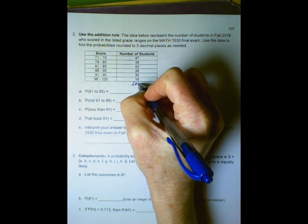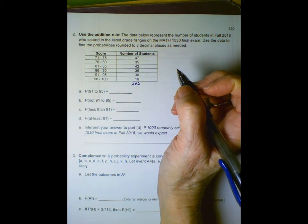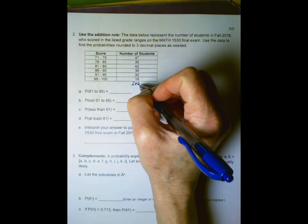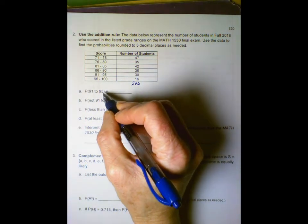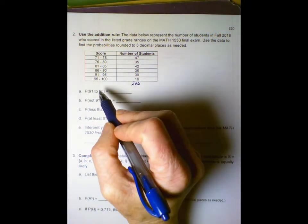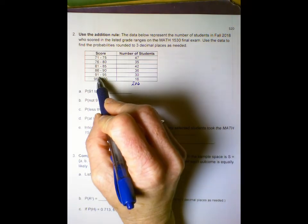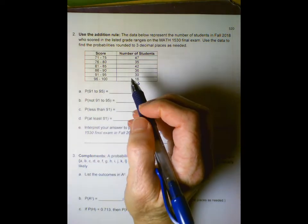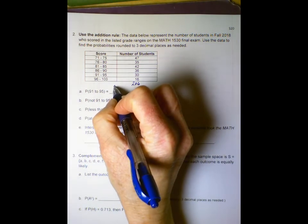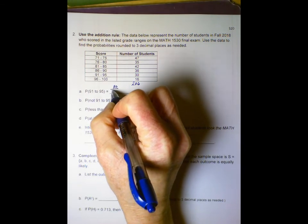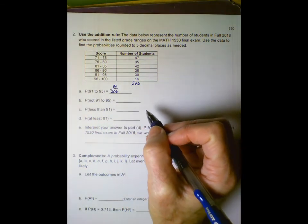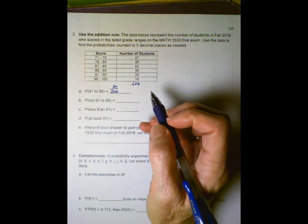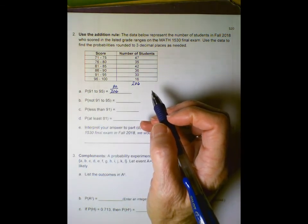Relative to 206 students, how many earned a score between 91 and 95? We can see that was 30. So 30 students out of 206 scored between 91 and 95.